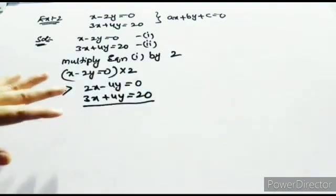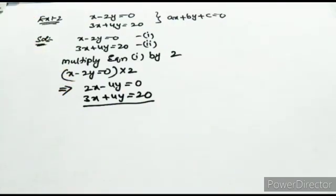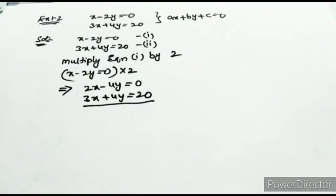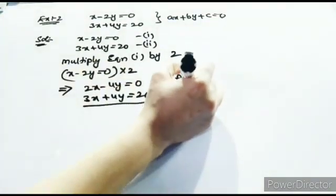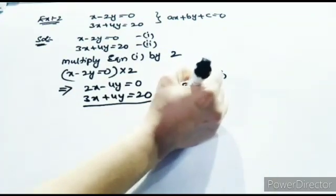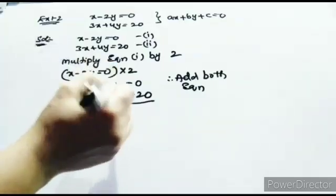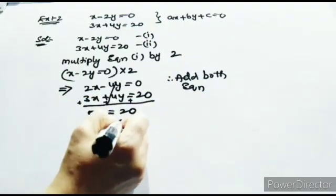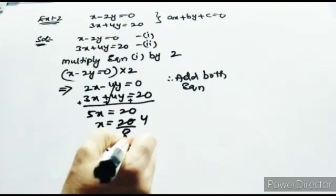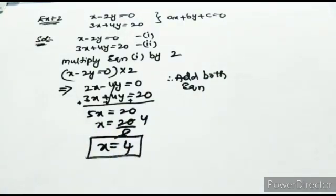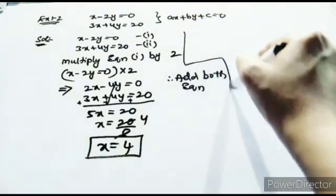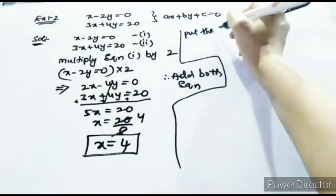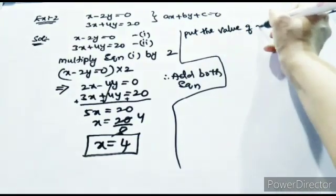In the previous example, the signs were the same so we subtracted. Here the signs of the y coefficients are different — minus 4y and plus 4y — so they can be eliminated by adding both equations. Adding gives: minus 4y plus 4y cancels, and 3x plus 2x gives 5x equal to 20. Therefore x equal to 20 divided by 5, giving x equal to 4.